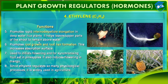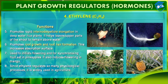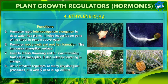Ethylene promotes root growth and root hair formation, which increases the absorption surface. It is also used to initiate flowering and synchronize fruit set in pineapple. It also induces flowering in mango. Since ethylene regulates so many physiological processes, it is widely used in agriculture.